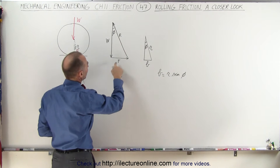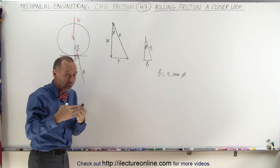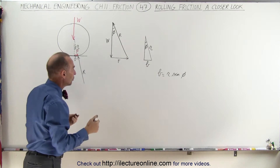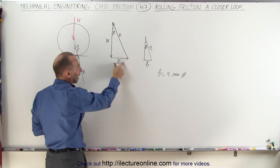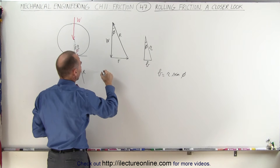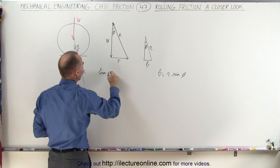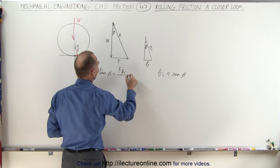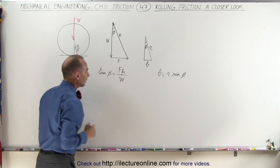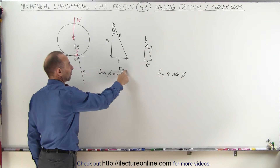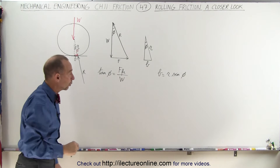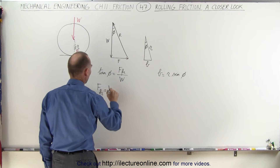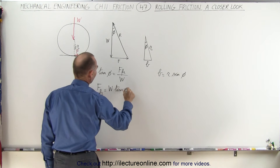We can do a relationship between f, the force required to keep the wheel rolling, and the weight on the wheel, or the load on the wheel. We can replace f in magnitude with the friction force. So we can say that the tangent of phi equals the friction force — the opposite side — divided by the weight on the wheel. The magnitude of the friction force equals the force required to keep the wheel rolling, so the friction force equals the weight times the tangent of phi.